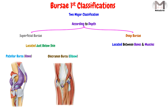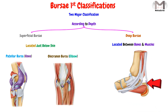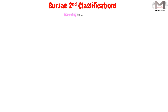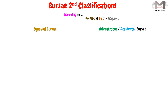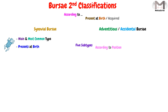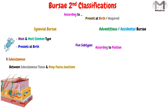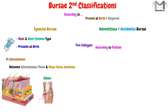The second classification will classify the Bursae according to whether it is present at birth or if it is acquired, so the Bursae will be classified into either synovial Bursae or adventitious (accidental) Bursae. Regarding the synovial Bursae, these are the main and most common type in the human body, present at birth. These synovial Bursae are subdivided into five subtypes according to position. The first is the subcutaneous Bursae, which exists between the subcutaneous tissue and the deep fascia junctions, such as the elbow and knee Bursae.